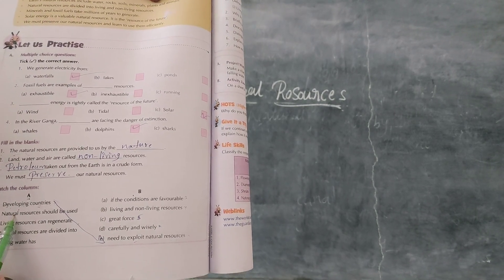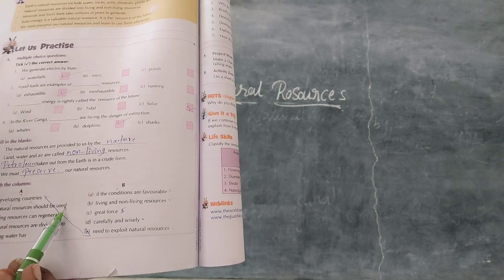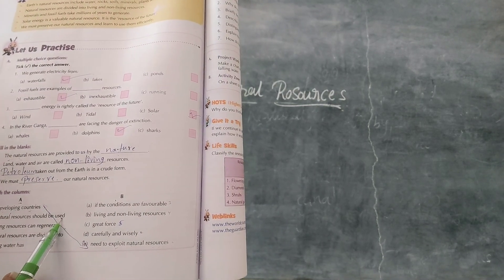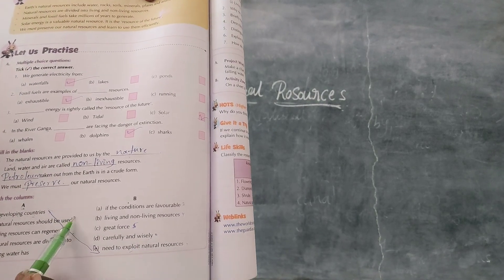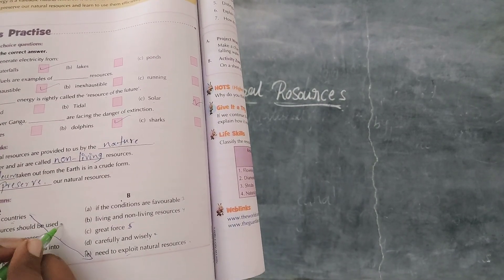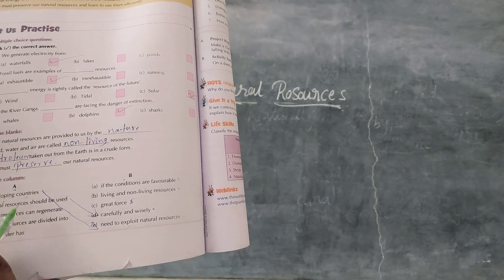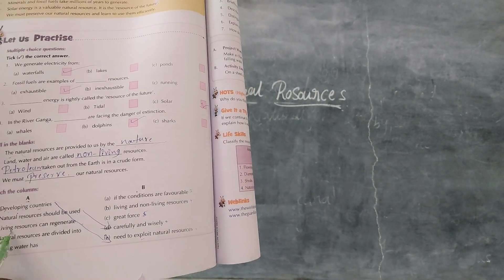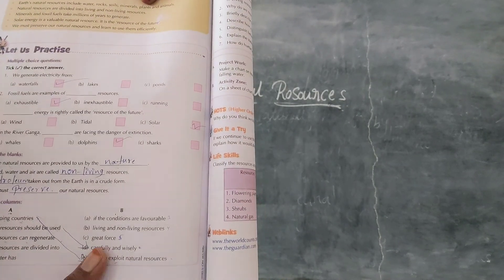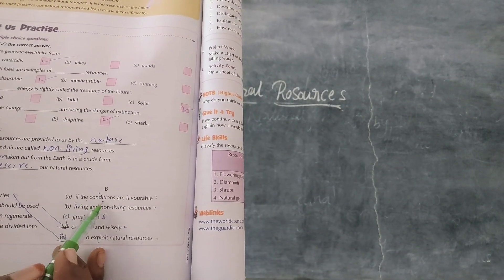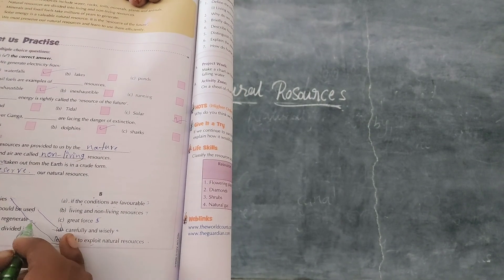Come to the second one. Natural resources should be used carefully and wisely. Match second one to the second column. Now come to the third one. Living resources can generate if the conditions are favorable. Match third one to the second column.